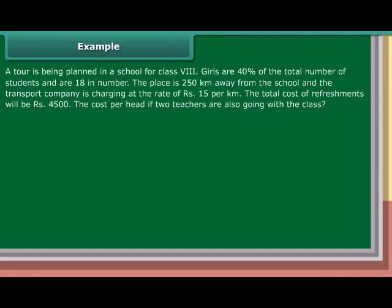Example: A tour is being planned in a school for Class 8. Girls are 40% of the total number of students and are 18 in number. The place is 250 km away from the school and the transport company is charging at the rate of Rs. 15 per km. The total cost of refreshments will be Rs. 4,500. Find the cost per head if two teachers are also going with the class.